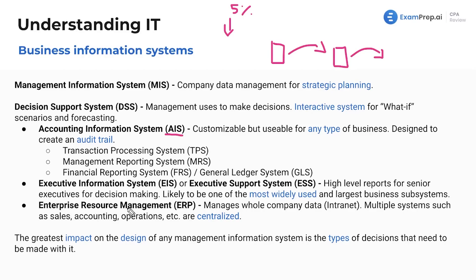ERP, the Enterprise Resource Management System, manages the whole company data. Intranet is essentially just the internal system, the internal network of a company. You've got the internet, which is everyone — we're all connected to that. This is your internal company's internet. You could think of North Korea's internal intranet — they've got their own internet. Multiple systems such as sales, accounting operations, et cetera, are all centralized. This is their one massive everything-under-one-roof, all in the same house. You can go in, make changes, and manage everything having to do with your business all together, and it all links up. Everything's communicating with each other.